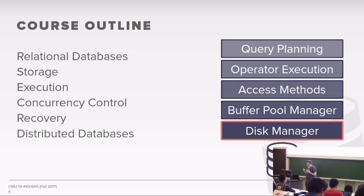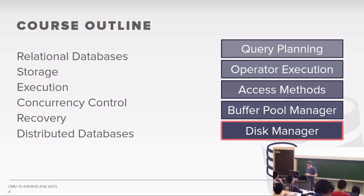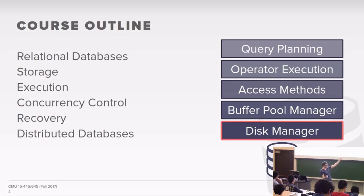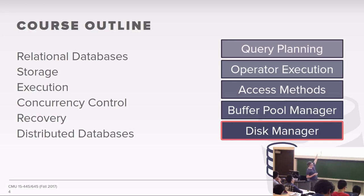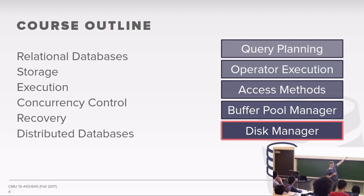The way to think about the database system is that it's a bunch of layers on top of each other providing different abstractions or APIs. At the very top you have query planning — the SQL query comes in, you turn it into a relational algebra query plan tree, and execute it. Those executors need to read data through access methods, which need the buffer pool manager and disk manager. We're going to start from the bottom and go up.